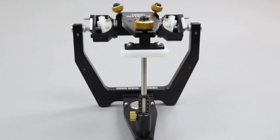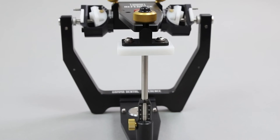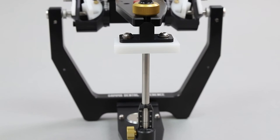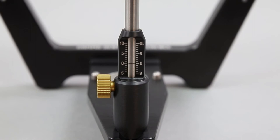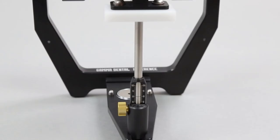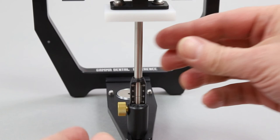Finally, we want to focus on the anterior guidance units which can be used with the Reference SL articulator. The articulator is delivered with a flat incisal table and an incisal pin mounted to the antagonist member. The incisal pin has a scale to allow exact implementation of vertical changes. The incisal table can be individualized.